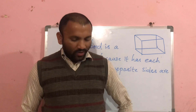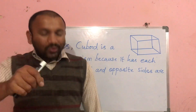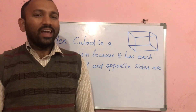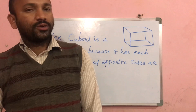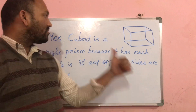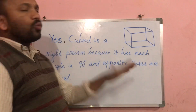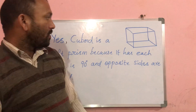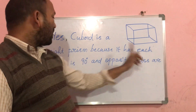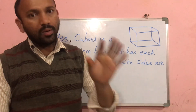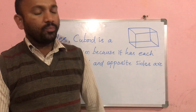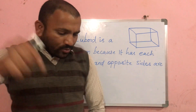Good evening. Today's question is: is a cuboid a right prism or not? My answer is yes. A cuboid is a right prism because each angle is 90 degrees and opposite sides are equal.